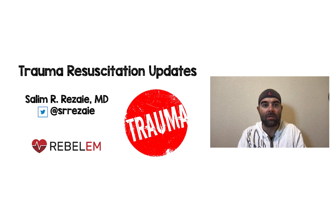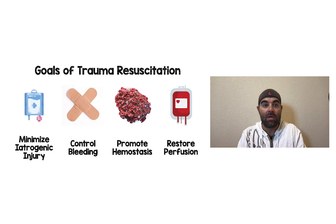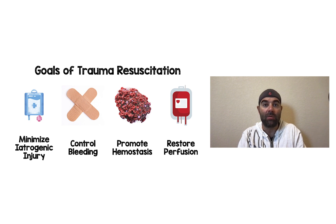All right, Rebel EM followers. This is the final and last installment of trauma resuscitation updates — this is part four. Part one covered minimizing iatrogenic injury. Part two, we talked about restoring perfusion. Part three, we talked about promoting hemostasis. Those are all posted on YouTube already. For part four, we're going to talk about controlling bleeding.